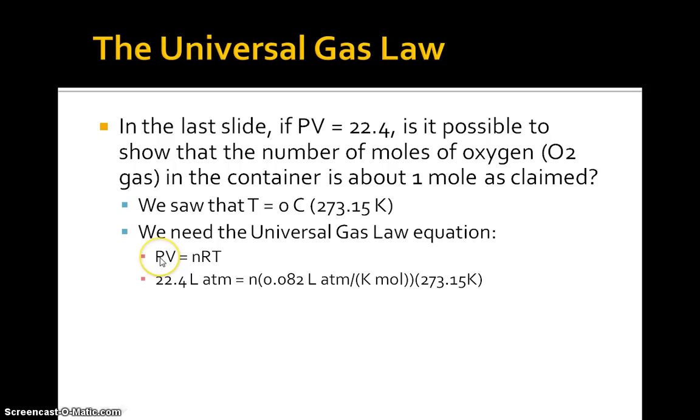So P was in atmospheres, V was in liters. When we multiply P by V, we get, as our units, liters atmospheres. And even though that doesn't seem to quite make sense, we keep it, because that's the way the units are. And once we do our division and solve for N, you're going to notice all of the units will cancel out except for the moles. And when we solve for N, that's exactly what we get, 1.000 moles. We actually get the number of moles back that was claimed.